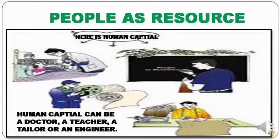Doctors, engineers, teachers, and tailors are also considered human resources. Not only do the more educated and healthier people gain through higher incomes, society also gains in other indirect ways, because the advantages of a more educated or healthier population spread to those who themselves were not directly educated or given health care.